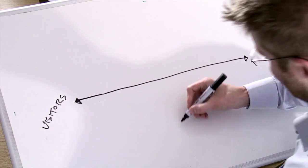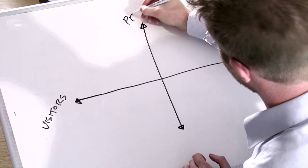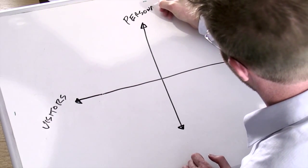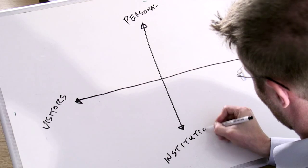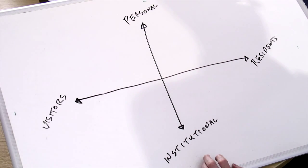Now what we can do with the continuum is add a vertical axis. In this case I'm going to write 'Personal' at the top and 'Institutional' at the bottom. That gives us a grid we can work with and we can plot how we engage with the web across these different quadrants. So for me — a simplified version of my personal engagement map — we can start over here. If I put a block down here, this is email for me, for example.